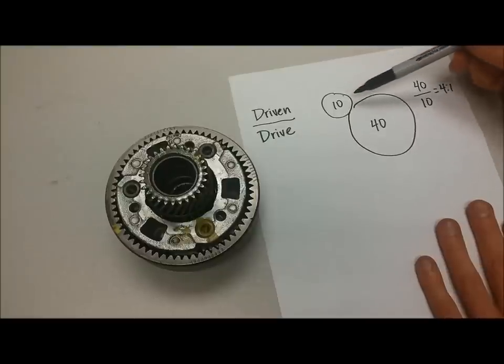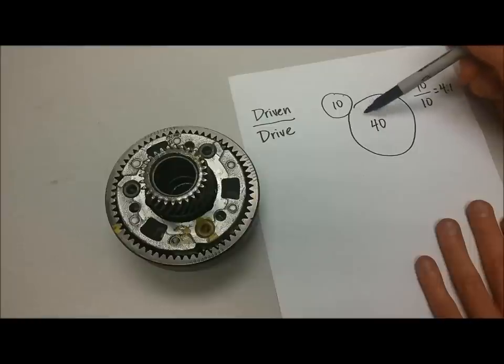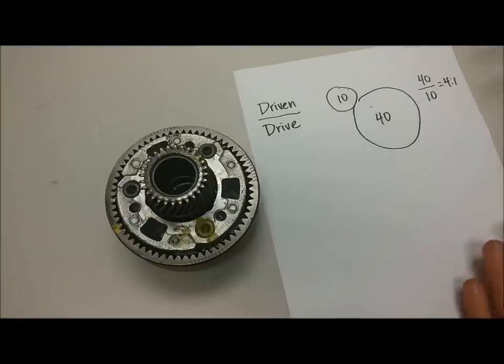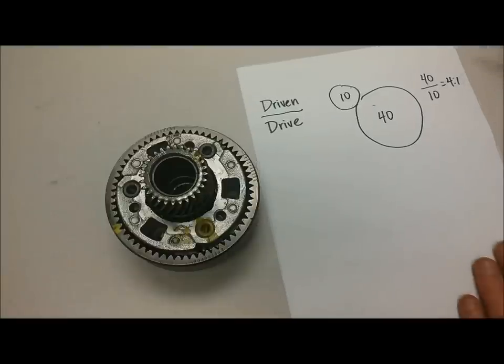So it affects the speed and the torque. Of course, the speed of this gear will be one-fourth the speed of this gear. But the torque at this gear will be four times greater than the torque at this gear. So it's a trade-off between speed and torque.